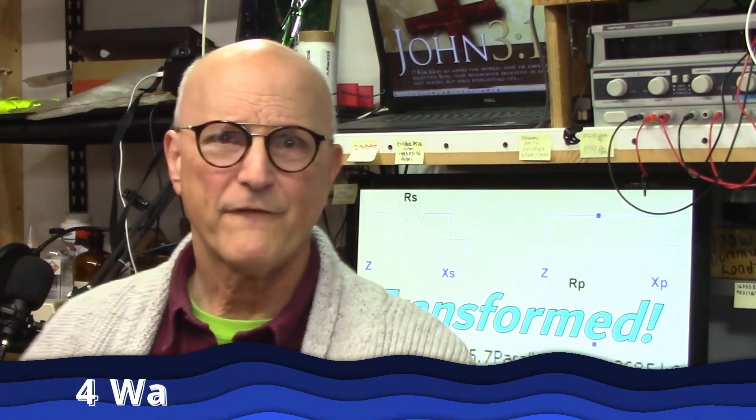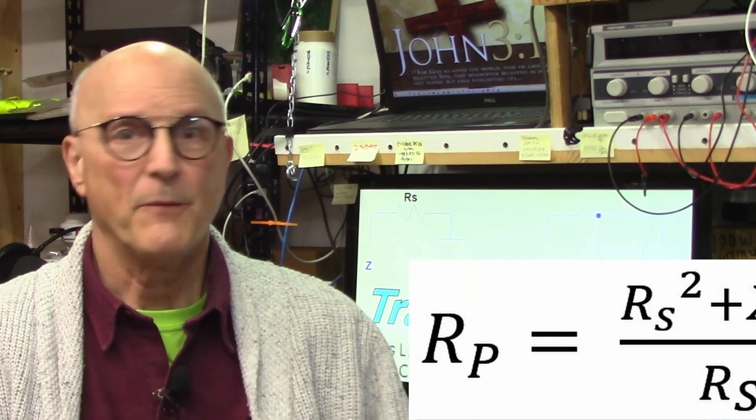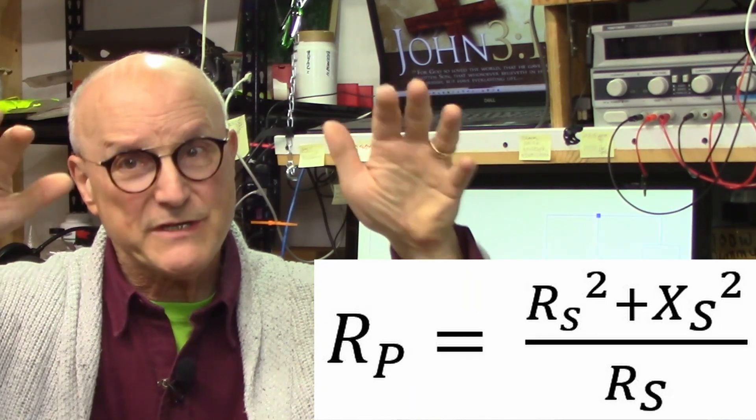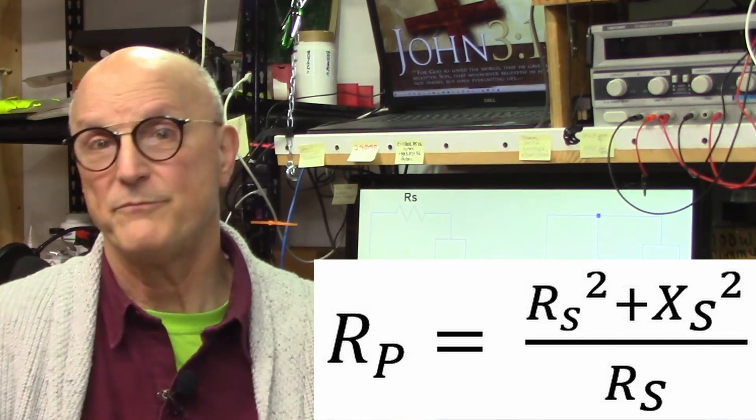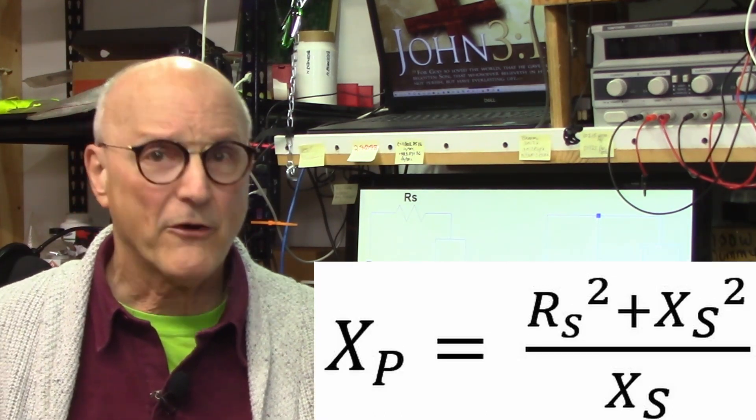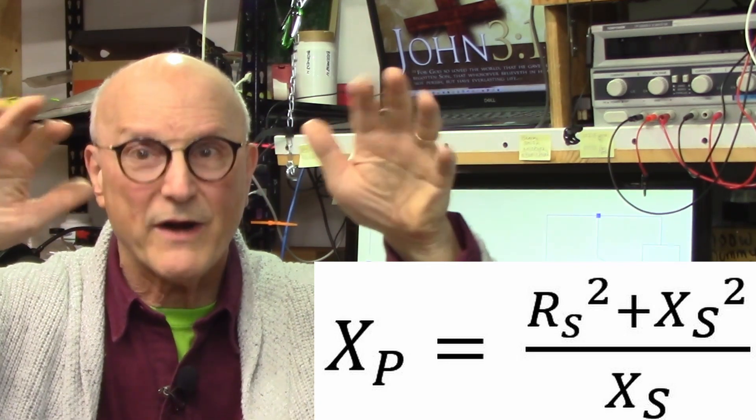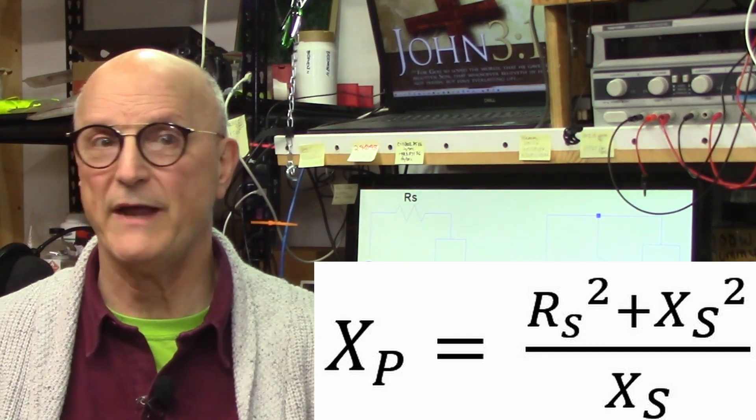So how do we actually get definitive values like we see on the screen? Well there are 4 ways to arrive at these values. The first and easiest way to do this is to use the following canned formulas. The parallel equivalent resistance is equal to the series resistance squared plus the series reactance squared all divided by the series resistance. The parallel equivalent reactance is equal to the series resistance squared plus the series reactance squared all divided by the series reactance.